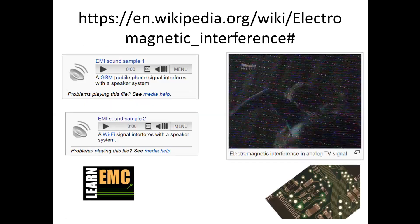Let's see how EMI sounds. EMI sound example 1 shows a GSM mobile phone signal interfering with a speaker system. EMI sound example 2 shows a Wi-Fi signal interfering with the speaker system.